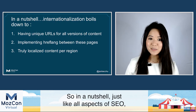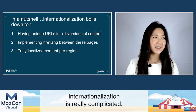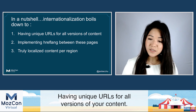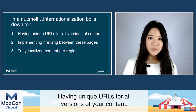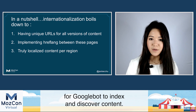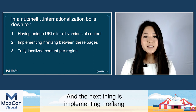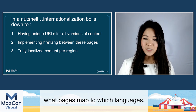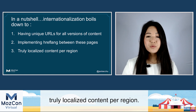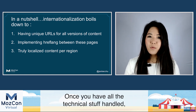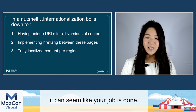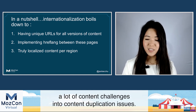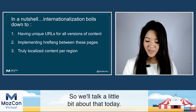In a nutshell, just like all aspects of SEO, internationalization is really complicated. There are so many factors, but internationalization really boils down to three things: having unique URLs for all versions of your content; implementing hreflang HTML directives between those pages so Google can understand what pages map to which languages; and having truly localized content per region. Once you have all the technical stuff handled, it can seem like your job is done — but a lot of times internationalization actually brings along content challenges and content duplication issues.